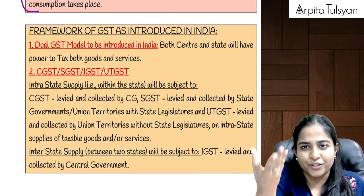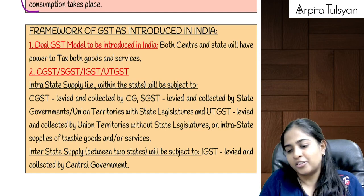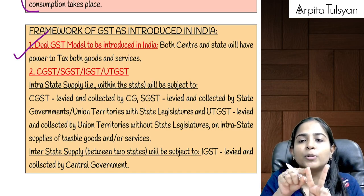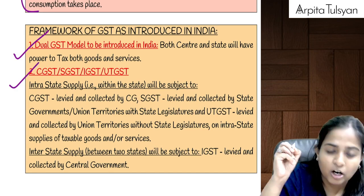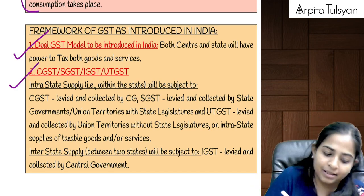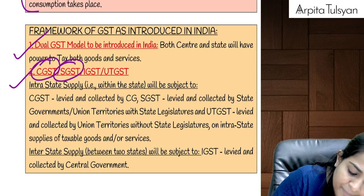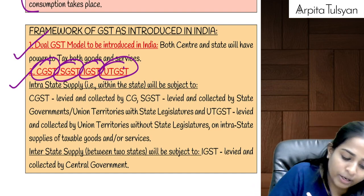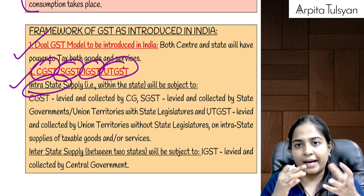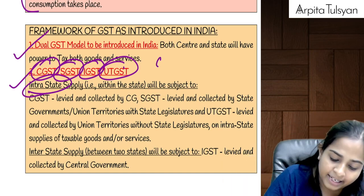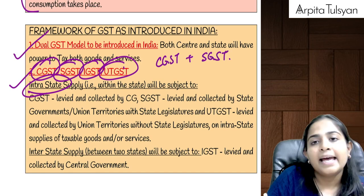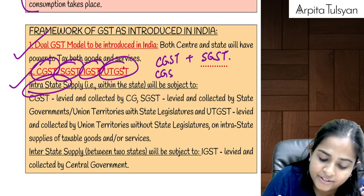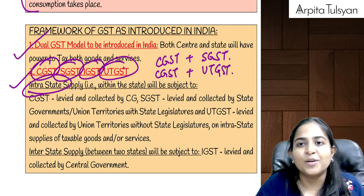Now we have some features or framework of GST. First, we can say GST is a dual GST model because the powers are given to both Parliament as well as the state government. Which types of taxes are applicable? CGST, SGST, IGST, and UTGST. When which type of tax is applicable? In case of intra-state supply — within the same state — two taxes will be applicable: CGST and SGST. What if it is within the same union territory? Then CGST plus UTGST will be applicable.